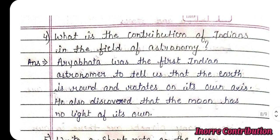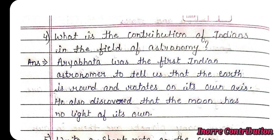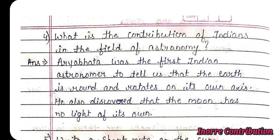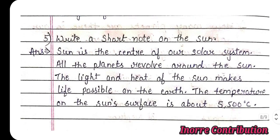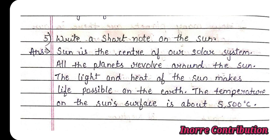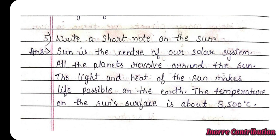Fourth question: What is the contribution of Indians in the field of astronomy? Answer: Aryabhad was the first Indian astronomer to tell us that the Earth is round and rotates on its own axis. He also discovered that the moon has no light of its own. Fifth question: Write a short note on the Sun. Sun is the center of our solar system. All the planets revolve around the Sun. The light and heat of the Sun makes life possible on the Earth. The temperature on the Sun's surface is about 5,500 degrees Celsius.